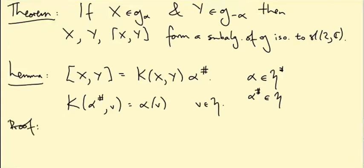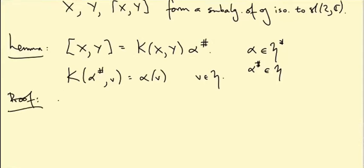Okay, so proof. For a start, let's show that X bracket Y is in H. Right, because alpha sharp is in little h. So if we're going to identify alpha sharp using this formula here, it had better be in H to begin with.